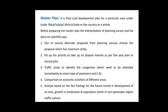Before preparing the master plan, the interpretation of the planning survey shall be done in a scientific way, in which out of several alternate proposals from the planning surveys, the proposal with the maximum utility is chosen. Utility here will be considered per unit length of the road — meaning at per unit length of road, maximum population should be served. Next, the priority is fixed to take up in the phased manner as per the 5-year plan or the annual plan.